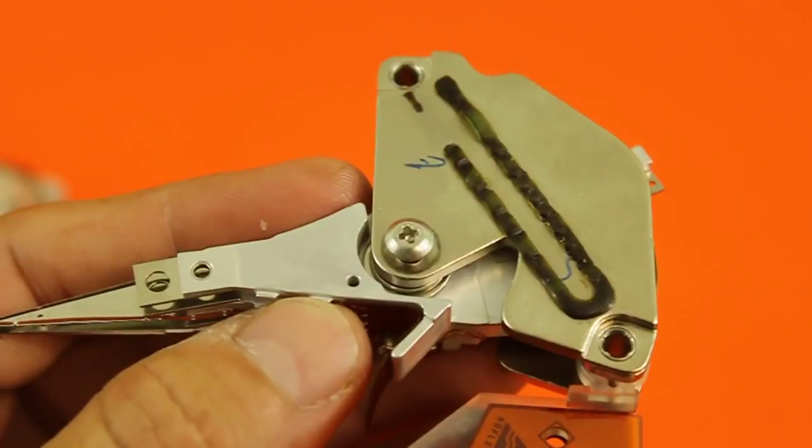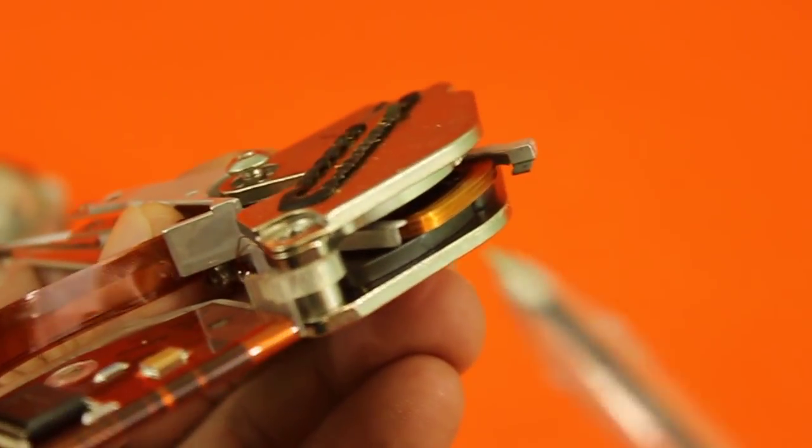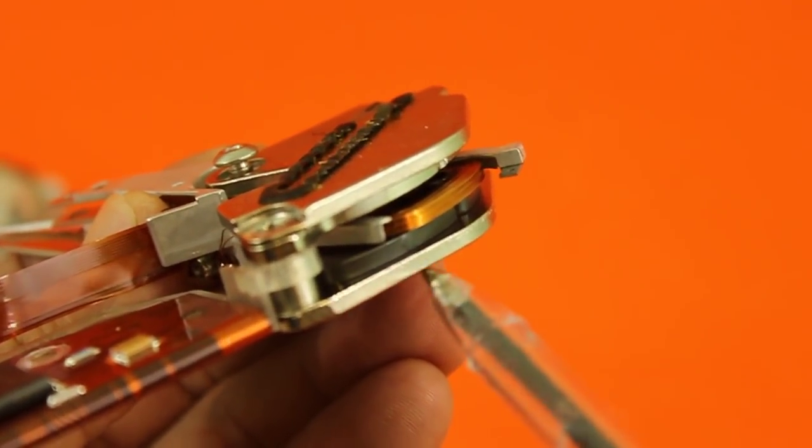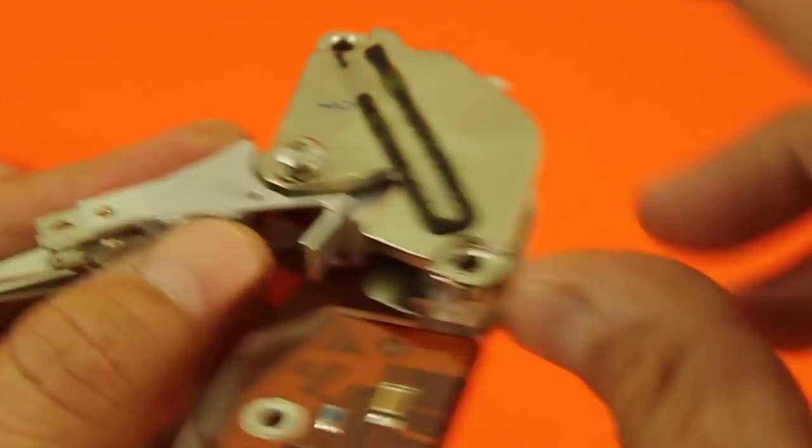Here we have the reading head assembly. You can see the coil and below it the neodymium magnet.